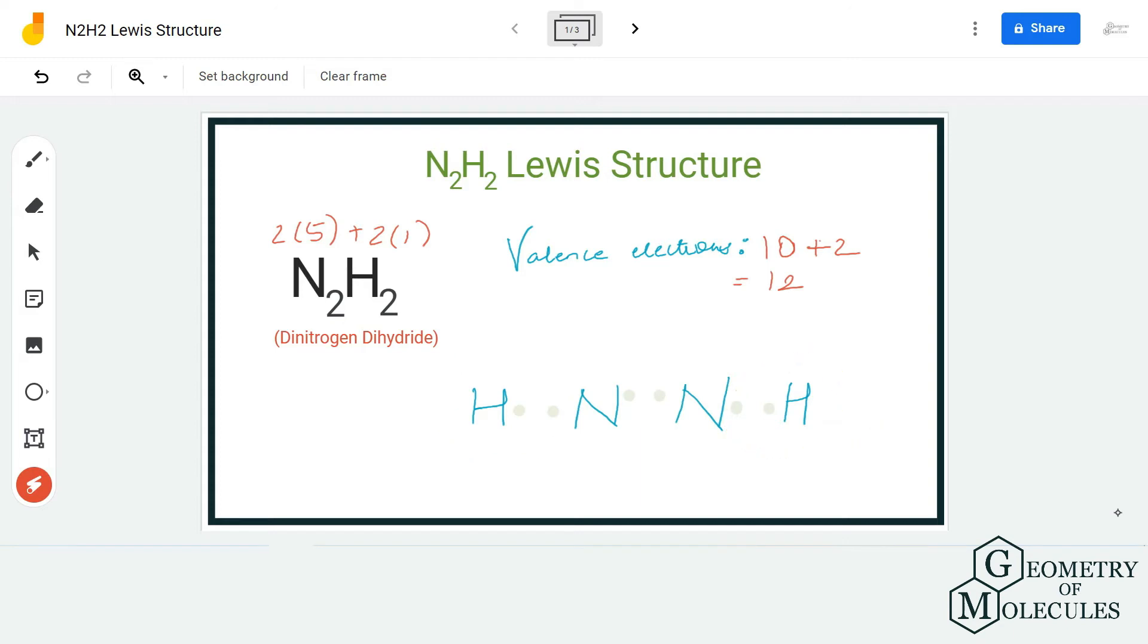Because if you recall, it just needs two valence electrons in its outer shell to attain a stable structure. So now hydrogen atoms are stable over here, and now we move forward to nitrogen atoms.